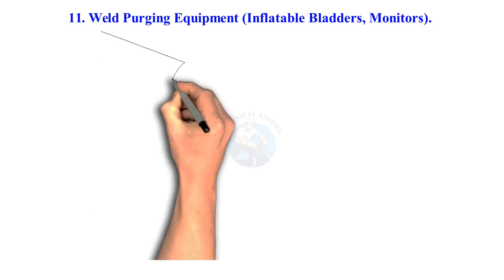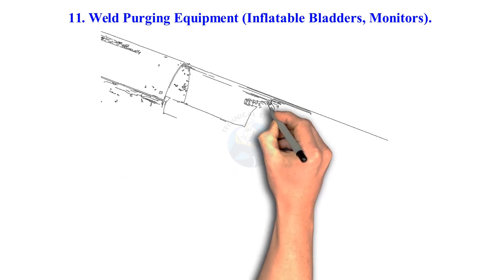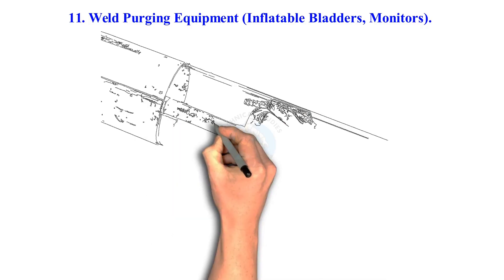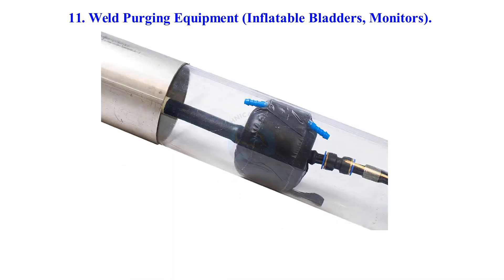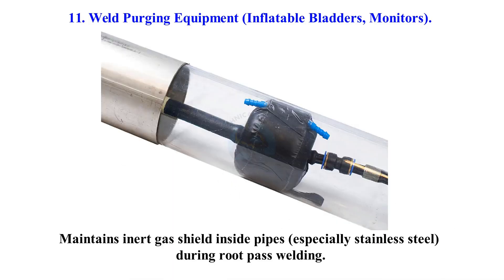Weld purging equipment — inflatable bladders and monitors. Maintains inert gas shield inside pipes, especially stainless steel, during root pass welding.